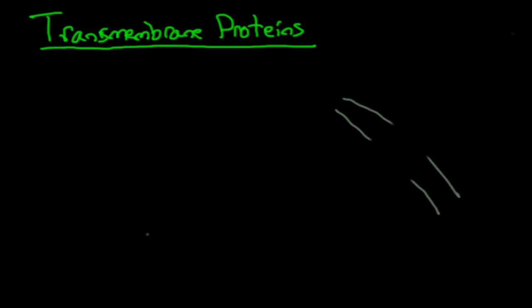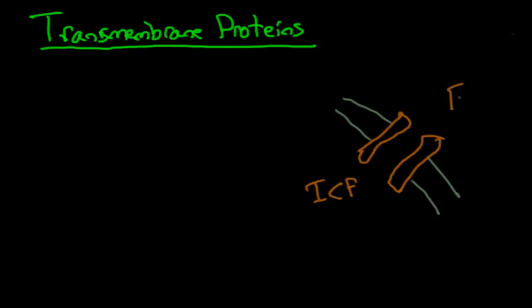If this were the plasma membrane right there, the transmembrane proteins are going to have access to the intracellular fluid and the extracellular fluid — meaning outside of the cell. Not all of these proteins look like this, mind you. This one right here I drew was actually a channel protein, which will be the first one I talk about.